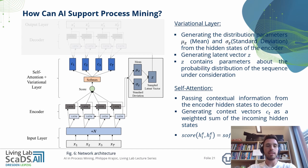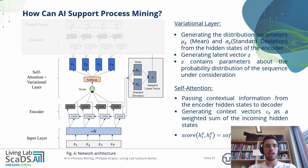Next we have a layer consisting of a self-attention and a variational layer. The variational layer generates the distribution parameters — mean and standard deviation — from the hidden states of the encoder, and generates the latent vector Z, which contains parameters about the probability distribution of the sequence under consideration. The variational layer learns the probability distribution of the data and gives precise control over the latent representation. The self-attention layer passes contextual information from the encoder hidden states to the decoder, generating context vectors as a weighted sum of the incoming hidden states. It allows selectively capturing relevant information, increases the performance of sequence-to-sequence models, and helps minimize the problem of vanishing gradients.